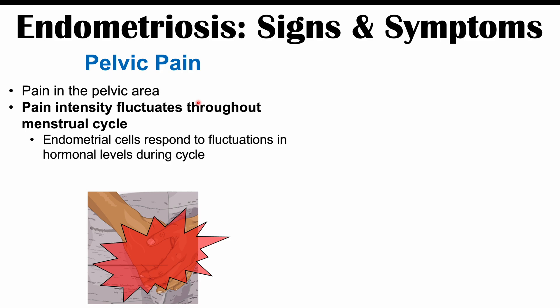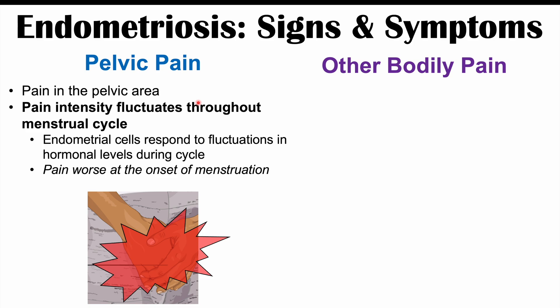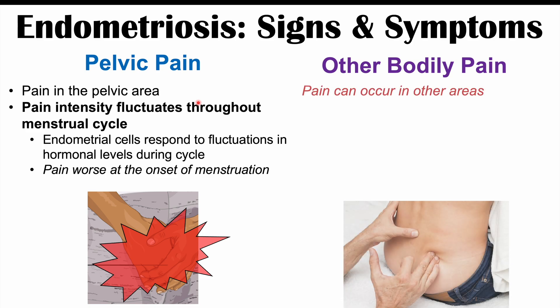The reason this happens is because the endometrial tissue in different places in the body itself responds to changes in hormone levels during the cycle. What is often found is that the pain is going to be worse at the onset of menstruation. This pain doesn't only have to be located in the pelvis — it can be found in other parts of the body as well, including the lower back, lower abdomen, and groin.